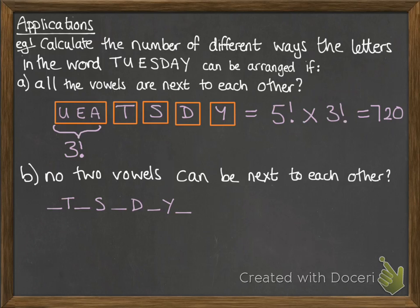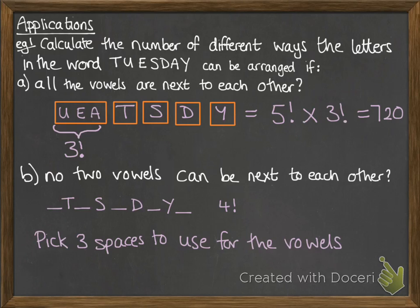First, thinking about the consonants, putting those four in would give us 4 factorial ways. Now we need to pick three spaces to use to place our vowels in. We have five possible places to put them and we could pick anywhere that we want. Now the order that we put them in would give us a different arrangement as well. So the order matters, therefore we're going to use a permutation. We've got five spaces, we're picking three of them to place our vowels in. The order makes a difference, so it's 5P3.